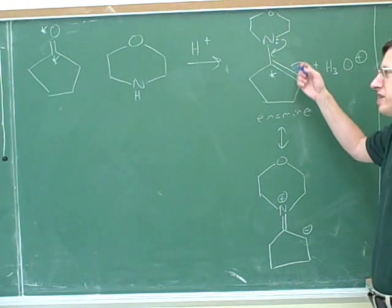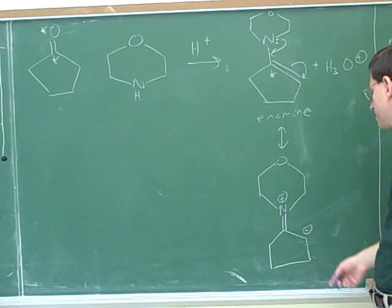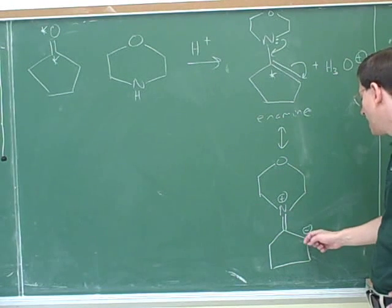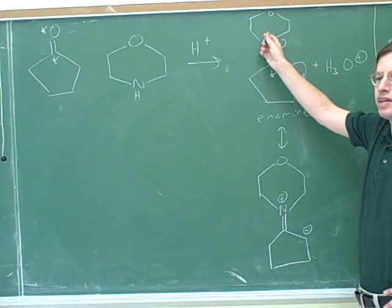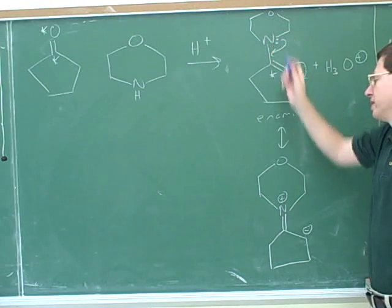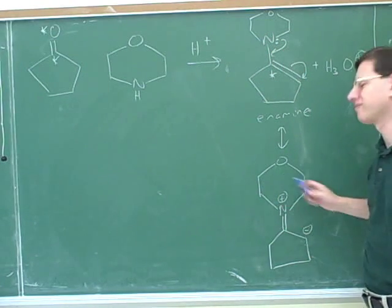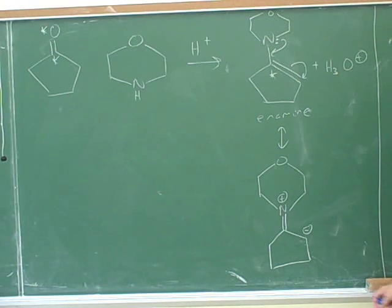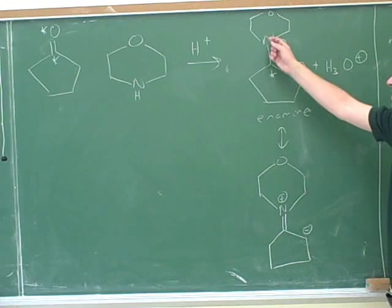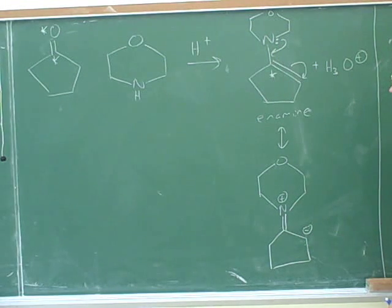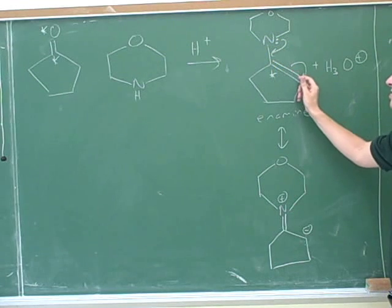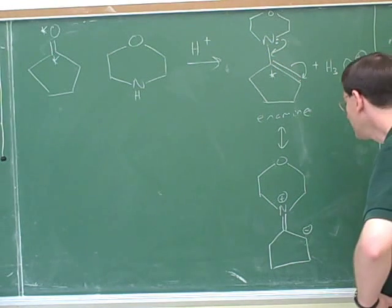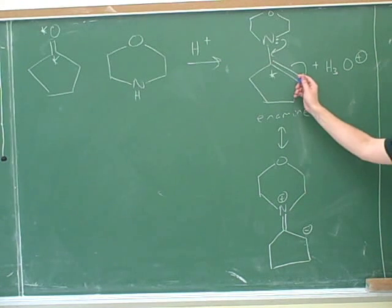We used this particular enamine, but we could make the same argument for any enamine. Any enamine has this resonance structure where there's a positive charge on the nitrogen and a negative charge on the alpha carbon. This also shows that the nitrogen is not nucleophilic — normally we'd think of nitrogen as nucleophilic because it has a lone pair, but it also has a resonance structure with a positive charge, which damps down its nucleophilicity. So when we see enamines, we focus on this carbon as the nucleophile, not the carbon connected to the nitrogen.